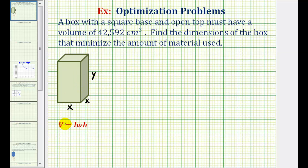Since the volume of a box is equal to the length times the width times the height, the volume of this box would be x times x times y, or x squared y. So we know that V must equal x squared y, which in this case must be 42,592 cubic centimeters. Because this equation must be true, we call this the constraint.